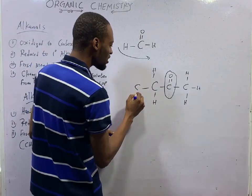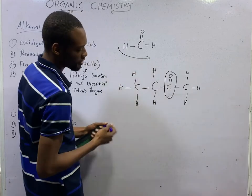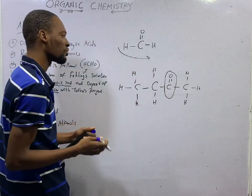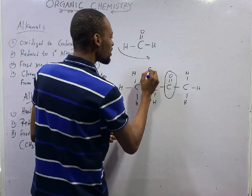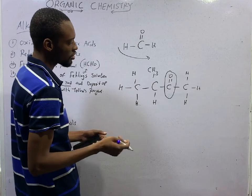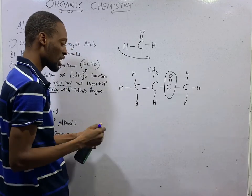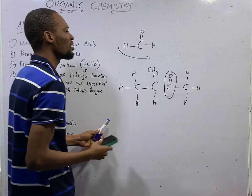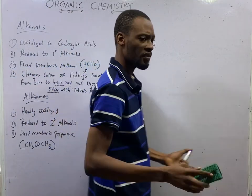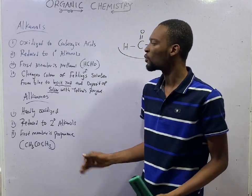If you add a carbon here, you get Butanone. If you put a CH₃ here, you get something like 3-methylbutanone or similar. But the main point is just to show you that the simplest member of the Ketones is Propanone.